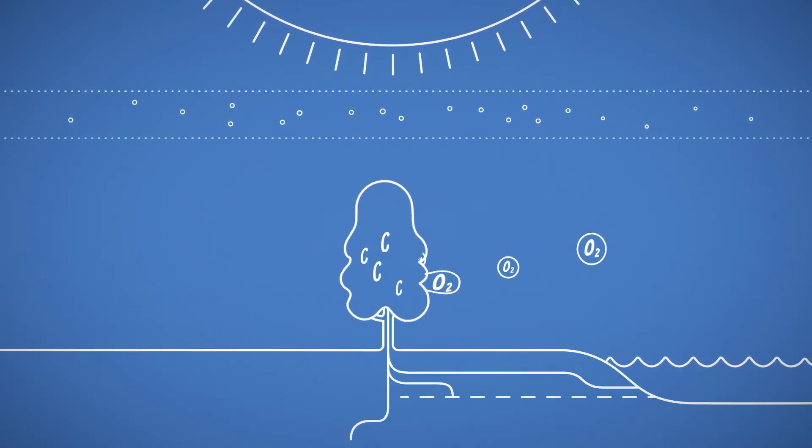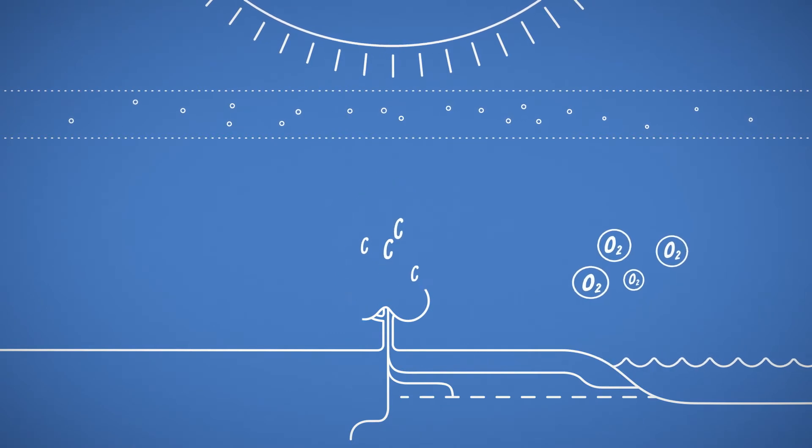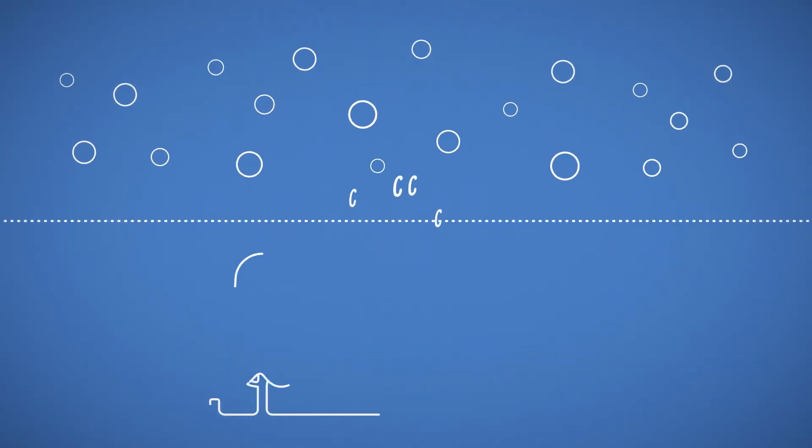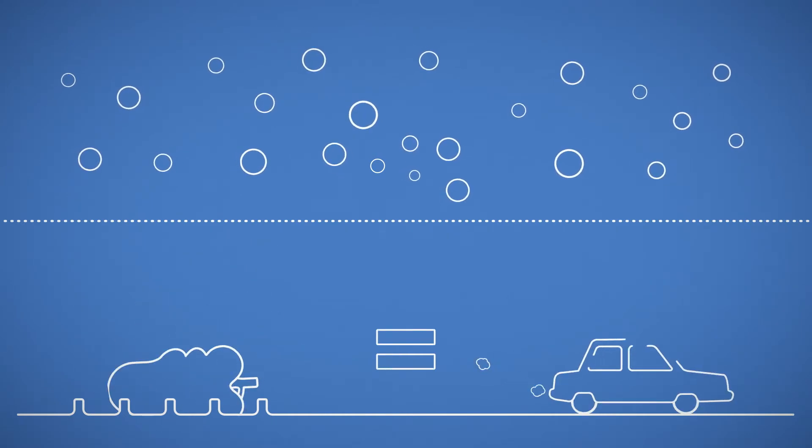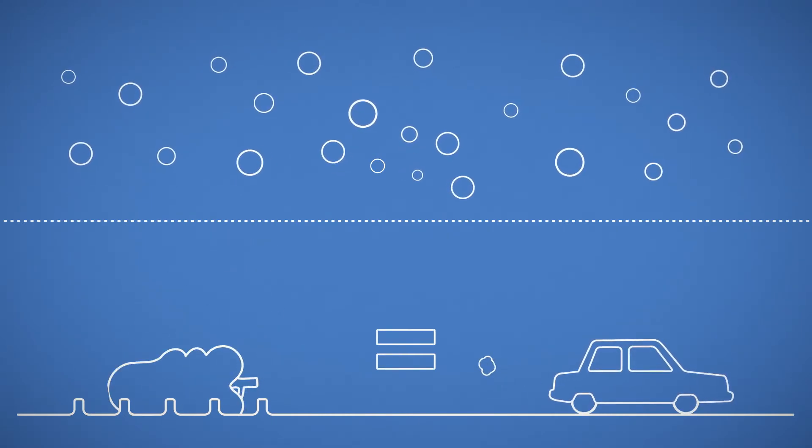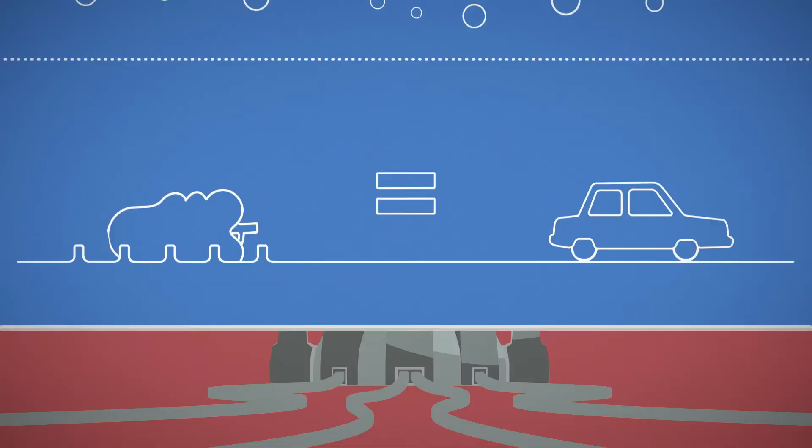Without forests, that carbon has nowhere to go but right back into the atmosphere. Deforestation is one of the biggest sources of greenhouse gas emissions. About the same as the emissions caused by transportation. And it doesn't stop there.